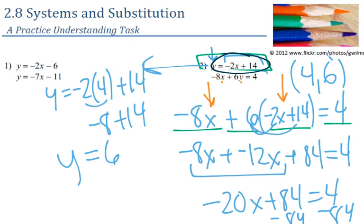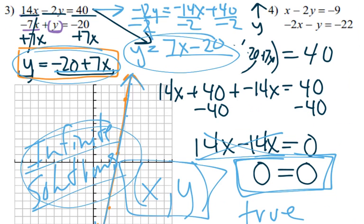Whenever you get rid of a variable and end up with something that is equal — like 0 equals 0 — that's one of our special types of answers, called infinite solutions. The previous problems had one answer; number 3 gives us infinite solutions.